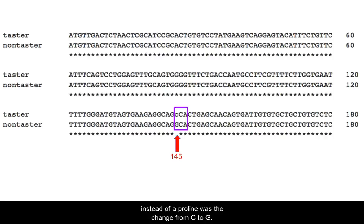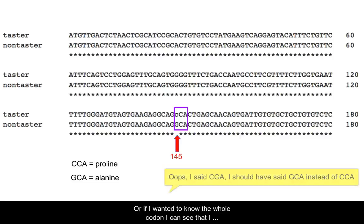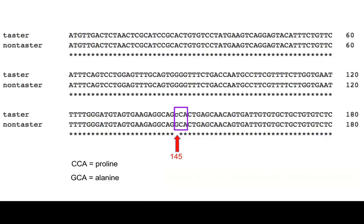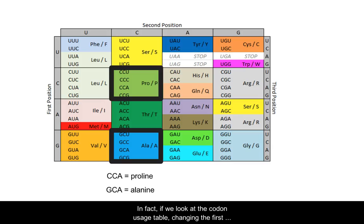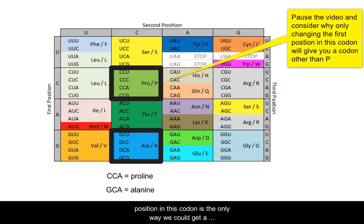If I wanted to know the whole codon, I can see that I have a CGA instead of a CCA. In fact, if we look at the codon usage table, changing the first position in this codon is the only way we can get a different amino acid from proline.